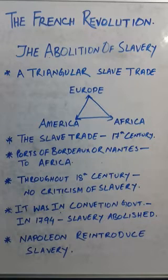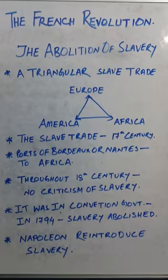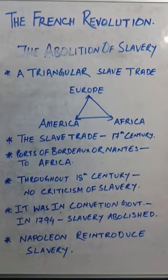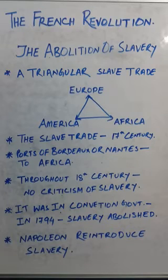The most revolutionary social reform of the Jacobin government was the abolition of slavery. The Convention government abolished slavery, but after that, the National Assembly government was formed, and that National Assembly government continued the practice of slavery.